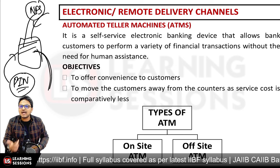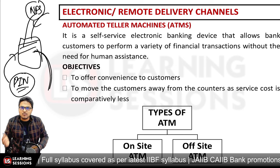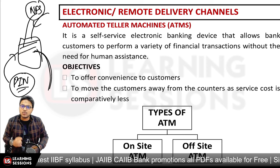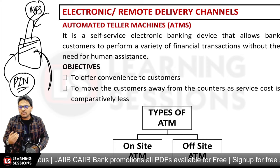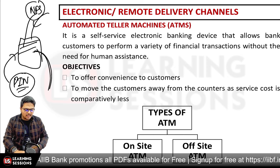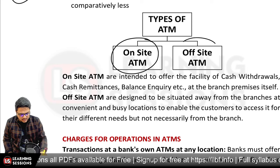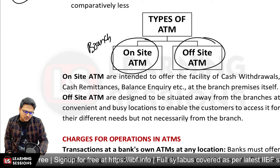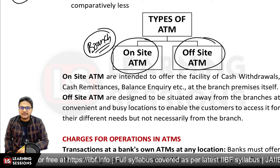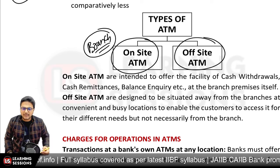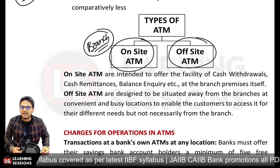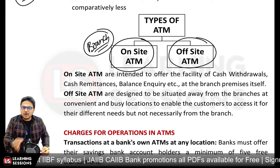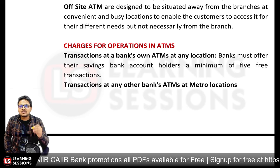ATMs can do financial and non-financial transactions. Non-financial transactions include mini statements, applying for a chequebook, paying utility bills, card-to-card transfers, and linking Aadhaar. The main objectives are to offer convenience to customers and move customers away from branch counters, as ATMs are cost-effective. There are two types: on-site ATMs (within the branch) and off-site ATMs (beyond the branch network, near homes or businesses).